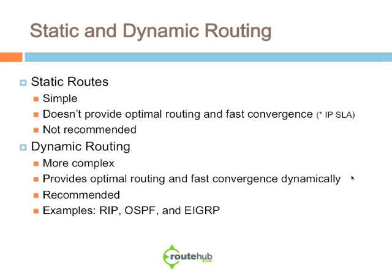The problem with static routes is that it doesn't really provide optimal routing and fast convergence, meaning that if an interface fails, static routes don't have the ability of rerouting across a different path.